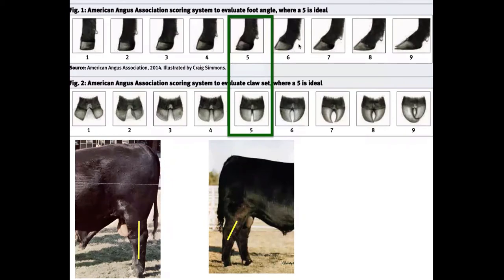When looking at feet, focus on foot angle — a score of 5 is desirable. You don't want animals that are too straight in their pasterns, which leads to a problematic foot over time. You also don't want animals getting shallow in the heel, which leads to long toes and weak pasterns, often becoming painful as those toes grow. As we move away from ideal in either direction on foot angle, the structure gets progressively worse.